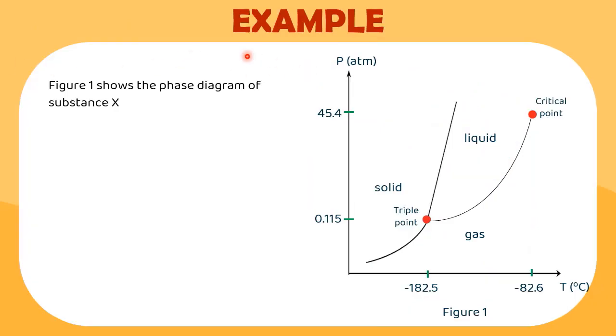Let's check your understanding in interpreting a phase diagram of a substance. Given the phase diagram of substance X, if we look carefully, this diagram has a positive slope, indicating more energy needed to melt the solid form of substance X. But the question didn't ask for its melting point.